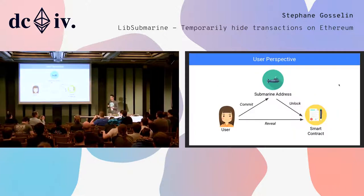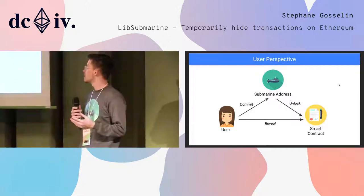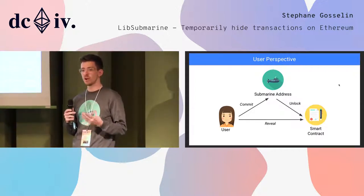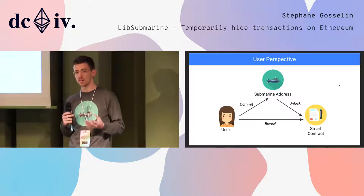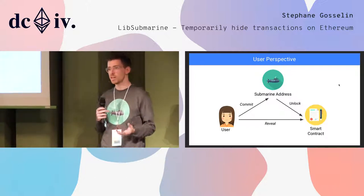From the user perspective, if you're just modifying a traditional commit-reveal scheme, it doesn't look very different. It still requires two signed transactions from the user, and then you have this third unlock transaction which is generated as a raw signed transaction and can be relayed by anyone communicating with the chain.